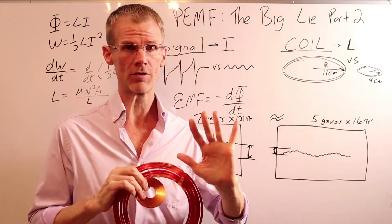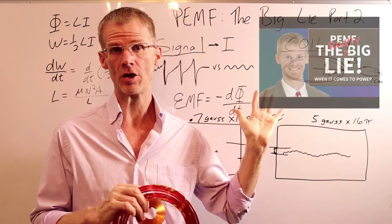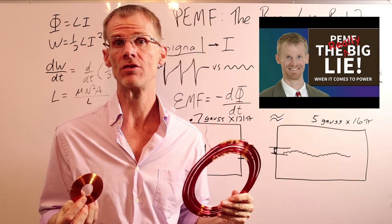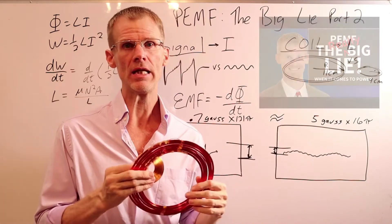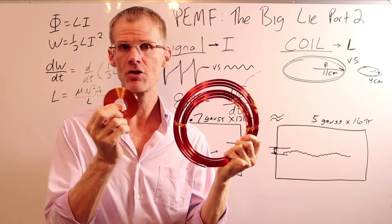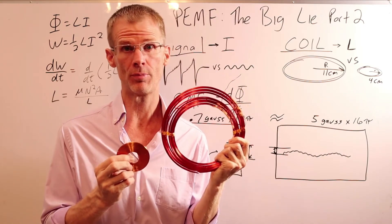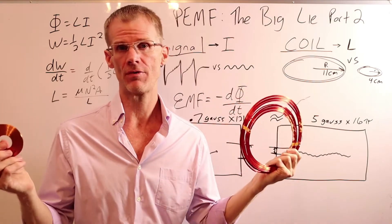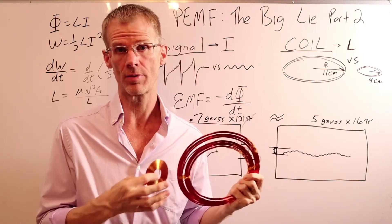Well, part of the confusion in the PEMF community comes from my first video, PEMF The Big Lie, where I talk about how the inverse square law is used incorrectly, meaning all PEMF coils have different sizes and geometries. We can't treat them all like an infinitesimally small point source. And that gives us answers that are off by 5,000% or more, like in Dr. Pollack's book.